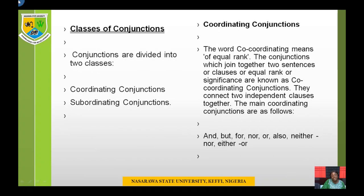The classes of conjunctions: conjunctions are divided into two classes — coordinating conjunctions and subordinating conjunctions. Coordinating means of equal rank. Conjunctions which join together two sentences, clauses, or words of equal rank are known as coordinating conjunctions; they connect two independent clauses. The main coordinating conjunctions are: and, but, for, nor, or, also, neither/nor, either/or.